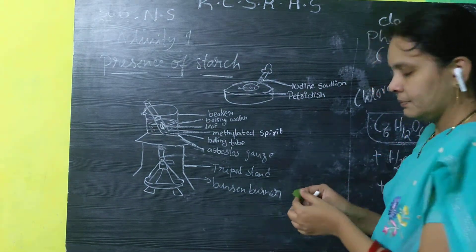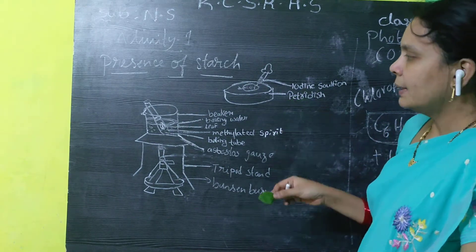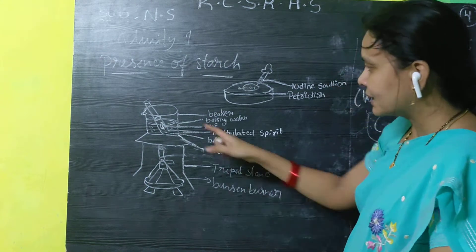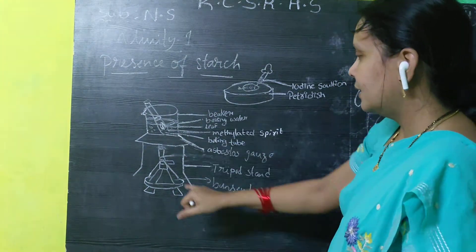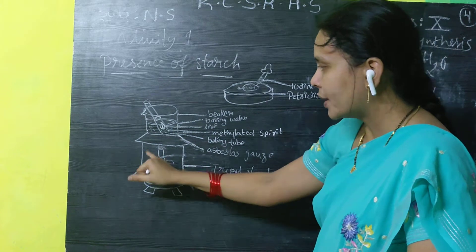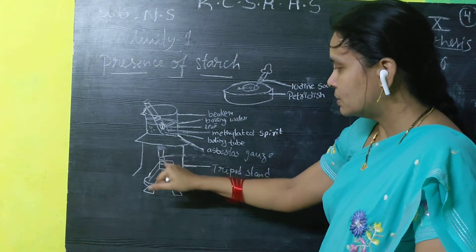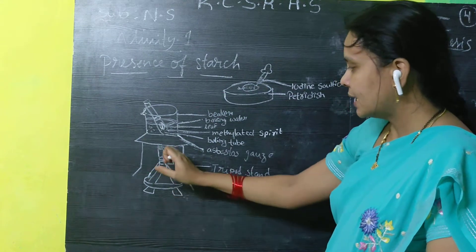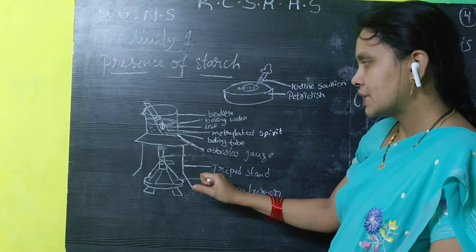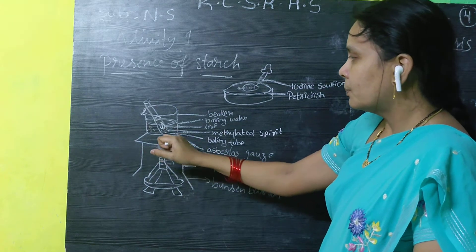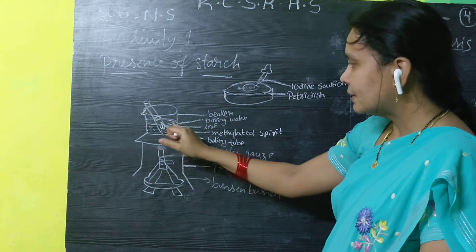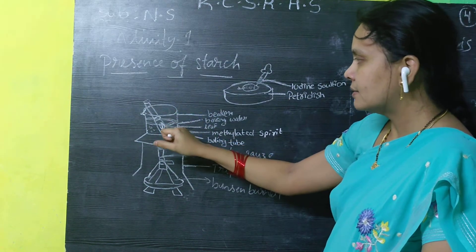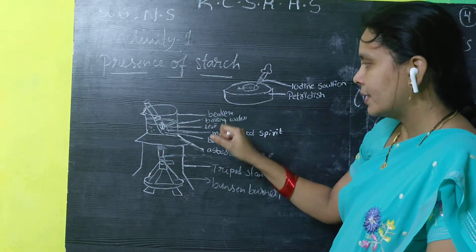Take a leaf and put the leaf inside the arrangement. What are the requirements? This is called a tripod stand. This is called a Bunsen burner — it can supply the flame. In the tripod stand you have to put a beaker. In this beaker the water is boiling.